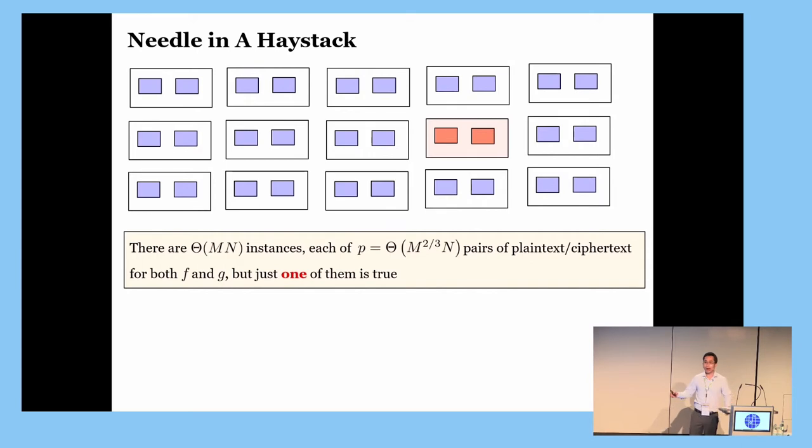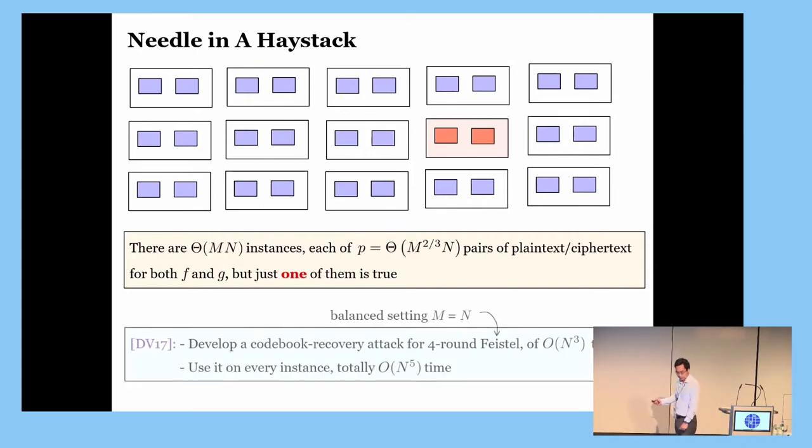So, essentially, we have a situation of needle in a haystack. We have a haystack of MN instances, but at most one of them would give us the needle, namely a true collision. So, how would we find the needle then?